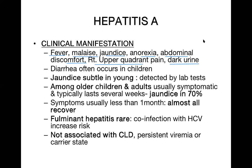The reason for dark urine is cholestasis. As a result of cholestasis, conjugated bilirubin is high in the blood. Conjugated bilirubin is water-soluble, so it is excreted in the urine, making the urine more yellow than normal. This is an example of hepatocellular jaundice.